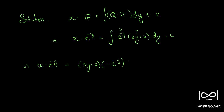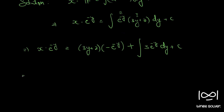Minus the integral of the differential of the first function, which is 3, times the integral of the second function, which is minus e raised to minus y dy, plus c. This gives x times e raised to minus y equals minus (3y plus 2) times e raised to minus y plus 3 times e raised to minus y divided by minus 1 plus c.